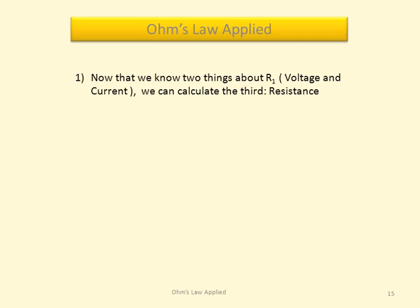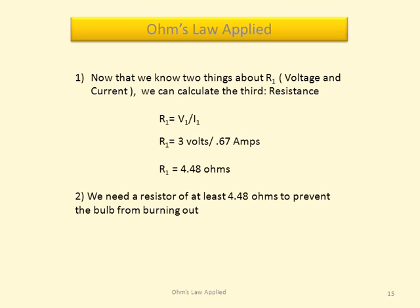Now that we know two things about R1, voltage and current, we can calculate the third, resistance. The resistance of R1 equals V1 divided by I1, or 3 volts divided by 0.67 amps. That gives us a resistance of 4.48 ohms. We need a resistor of at least 4.48 ohms to prevent the bulb from burning out.